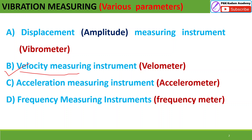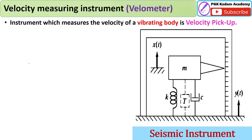This velocity measuring instrument is also called a velometer. The velometer works like a seismic instrument. The seismic instrument measures the velocity of the operating body and picks up the velocity. It is called a velocity pickup because the transducer is inside the instrument along with it.